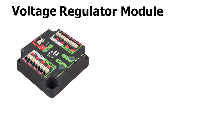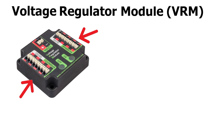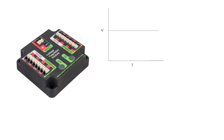The voltage regulator module, also known as the VRM, provides clean regulated 5-volt or 12-volt power to smaller devices. By contrast, power coming out of the PDP is unregulated and typically has inconsistent voltage that varies with the state of the robot and the battery. The radio is powered from the VRM.